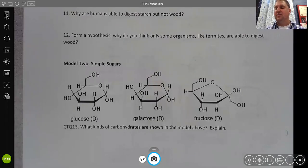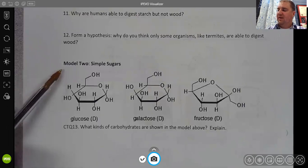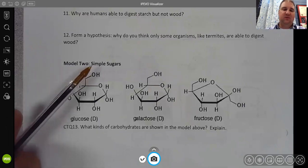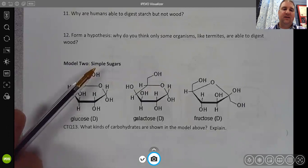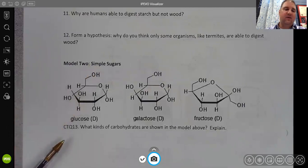Welcome Pickens High students in biology. In this video I want to emphasize a few of the things in the first couple of pages of the macromolecules packet. If you'll take a look quickly at model 2 which says simple sugars, so this is kind of a clue, and the critical thinking question here says what kinds of carbohydrates are shown in the model above? Explain.